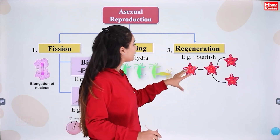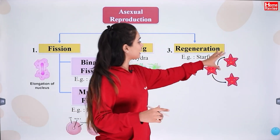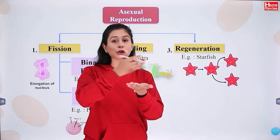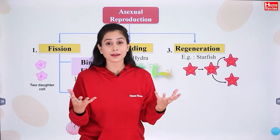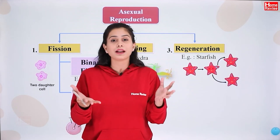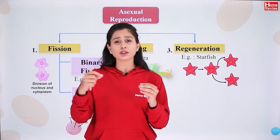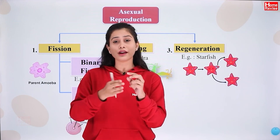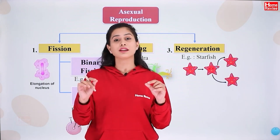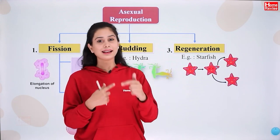Regeneration. Example: starfish. If a starfish is broken, it can become a new starfish. A new organism grows from every broken part. You can imagine it — it will seem very unbelievable. Similarly, the lizard's tail can be cut very easily, and if it is cut, it will grow a new tail, because it has the power of regeneration.